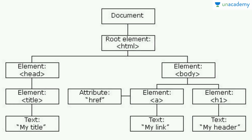Basically, this is the Document Object Model — a tree diagram. Suppose you have an HTML page: it has a head element, the head element has a title element, and the title element has the title content. On the other side, the HTML element also has a body element. The body element has an h1 element, an anchor element, and the link of that anchor tag. This all becomes the DOM tree. We will use this picture in every video to see how the DOM is actually working.